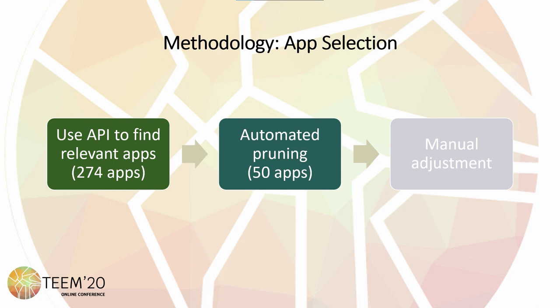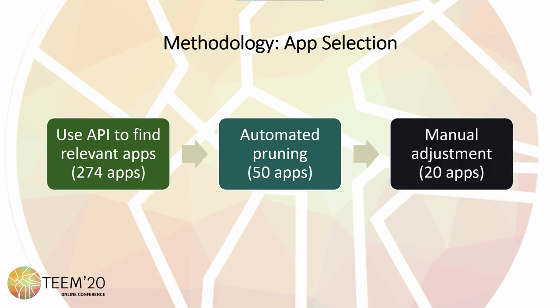Next, the script automatically filtered out less relevant apps based on specific criteria. 60 apps were removed during this process, leaving 50 apps for the final filtering phase. The last process was handled manually. The 50 apps were investigated for their purpose and target audience. The filtered list contained 18 apps, and two apps that were not found during this process but met the criteria were added through Google Play Store recommendations. Therefore, the total list contained 20 apps.